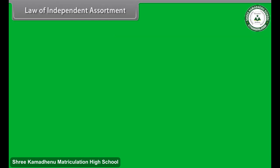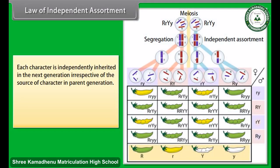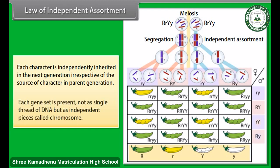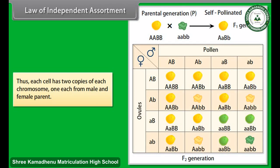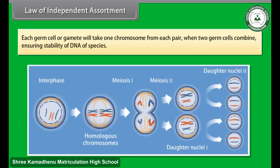Law of Independent Assortment: Each character is independently inherited in the next generation, irrespective of the source of the character in the parent generation. Each gene set is present not as a single thread of DNA, but as independent pieces called chromosomes. Each cell has two copies of each chromosome, one each from the male and female parent. Each germ cell or gamete will take one chromosome from each pair when two germ cells combine, ensuring stability of the DNA of the species.